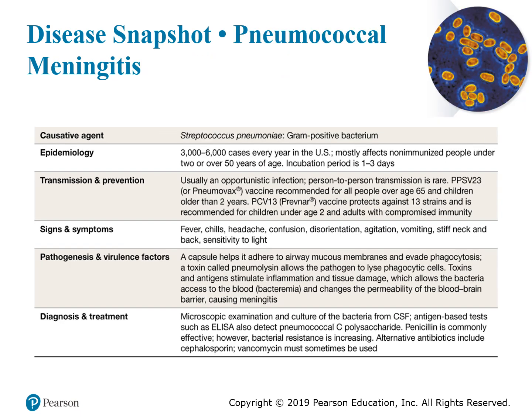Streptococcus pneumoniae, a gram-positive coccus, is the leading cause of bacterial meningitis according to the National Institutes of Health. Symptoms include fever, chills, headache, confusion, stiff neck, and sensitivity to light. Vaccines exist for this organism. Because it contains a capsule, it can adhere to mucosal membranes and evade phagocytosis. It produces a toxin that lyses phagocytic cells, creates an inflammatory response allowing bacterial access to the blood, and then penetrates the blood-brain barrier, causing meningitis.